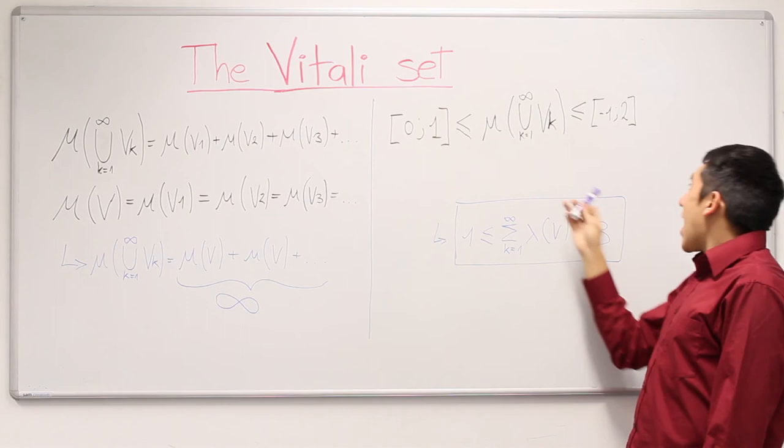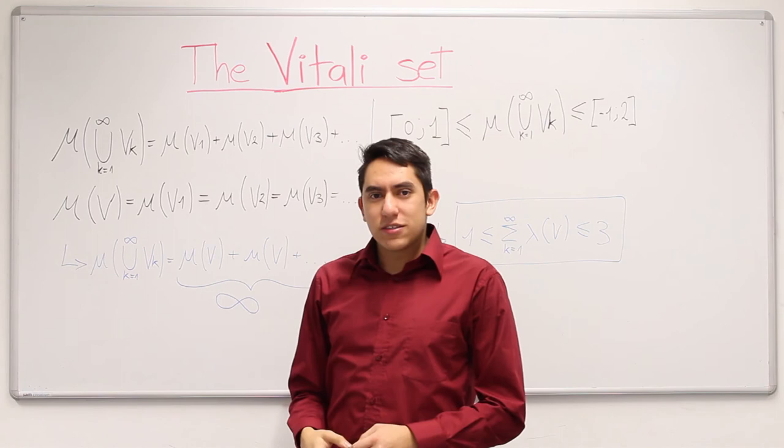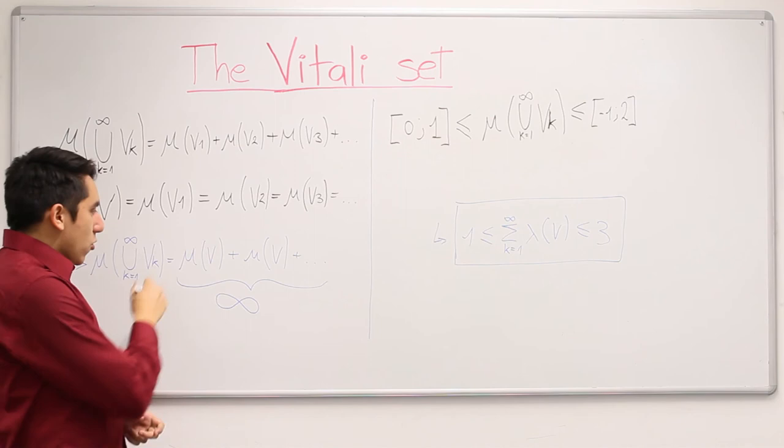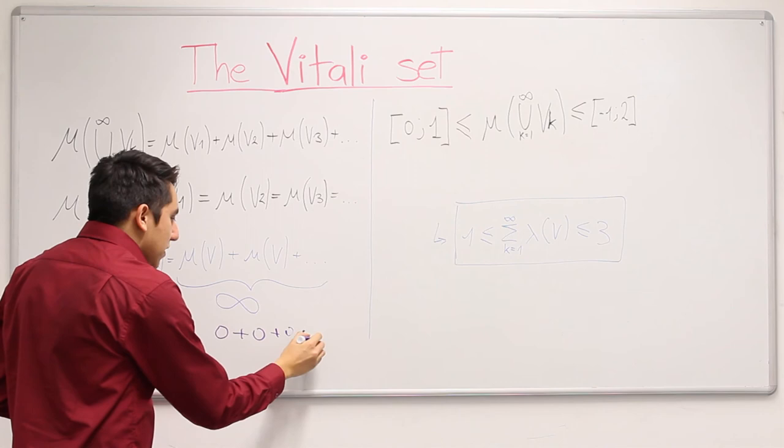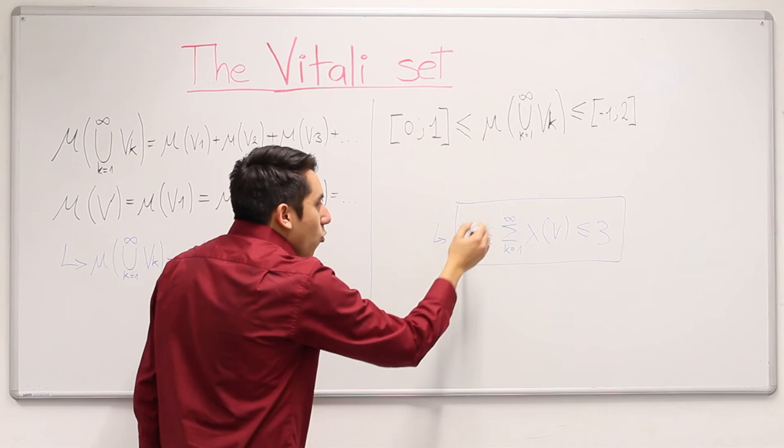But we have a problem here. Can you see it? Let's suppose that the size of the Vitali set is 0, so we add 0 plus 0 plus 0 plus 0 infinite many times, and we get the result 0. But 0 is not between 1 and 3, so we have here a contradiction.